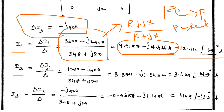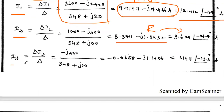Similarly, i2 = Δi2 / Δ = (1200 - j400) / (348 + j20). Converting to polar: i2 = 3.629∠-21.7° amps. The third mesh current i3 = Δi3 / Δ = (-j400) / (348 + j20), giving i3 = 1.147∠-93.3° amps.